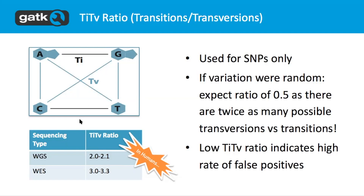The TiTv ratio: if it were completely random, you would have one opportunity for a transition and two opportunities for a transversion. Of course it's not random — transitions are about four to six times more likely. With two opportunities for transversion, that gives you a TiTv ratio of about 2.0 to 3.0. If this ratio is low, it indicates that you may have a high rate of false positives. This applies in humans.